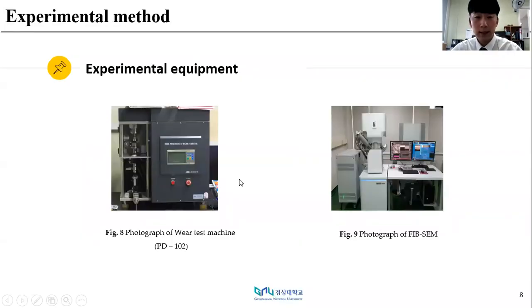Figure 8 showed the abrasion tester shape. The testing device was a PD-102 type abrasion tester. It is a dry vertical abrasion tester that applies pressure from the top while rotating a disc specimen.